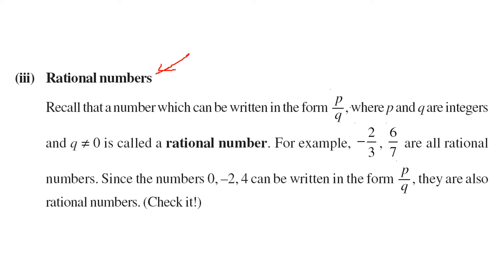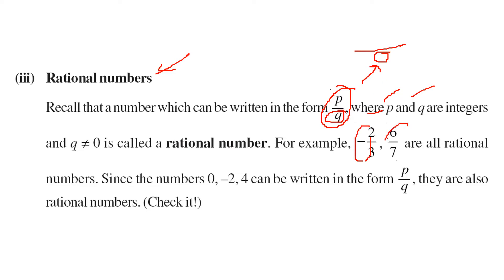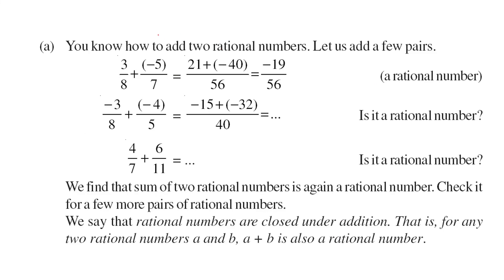When we talk about rational numbers — rational numbers are the numbers which can be written in the P by Q form, where P and Q are integers and Q should not be equal to 0, because anything divided by 0 is not defined. All these are rational numbers — any number can be written in P by Q form. For example, minus 2 is a rational number because I can write it as minus 2 divided by 1.